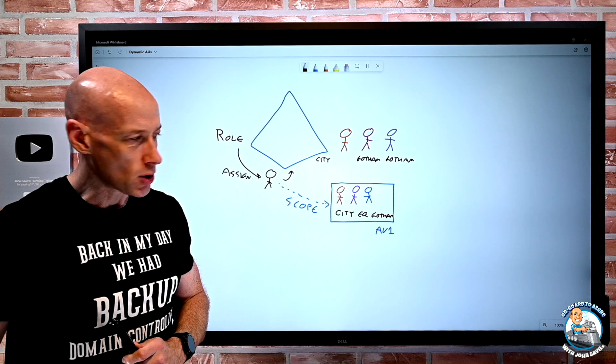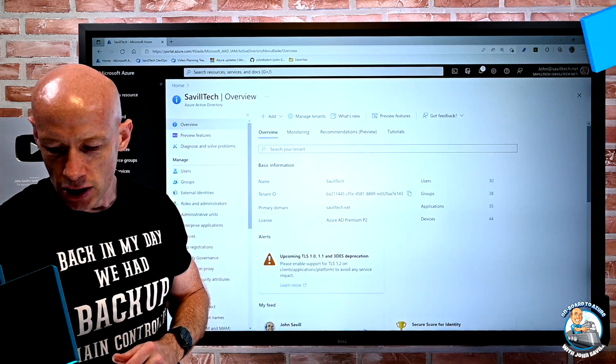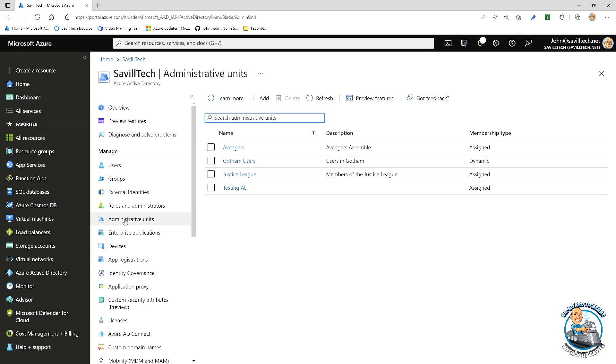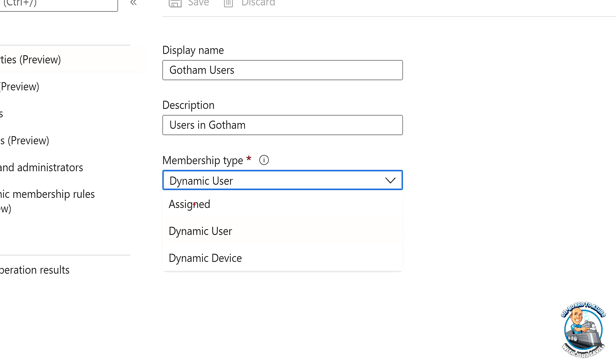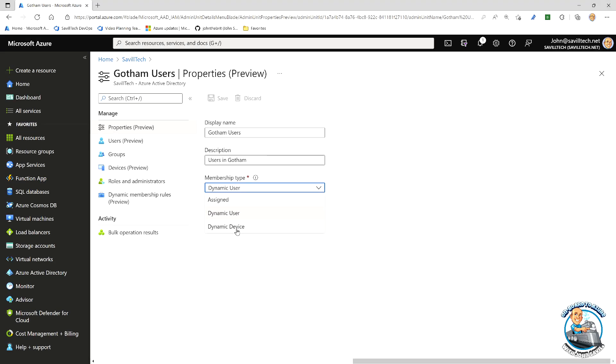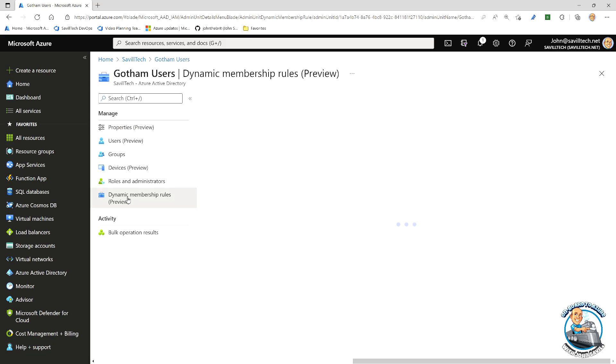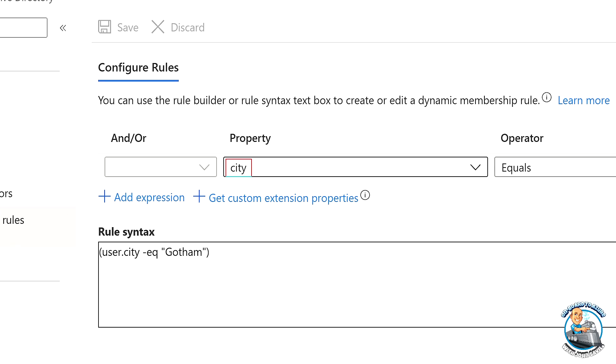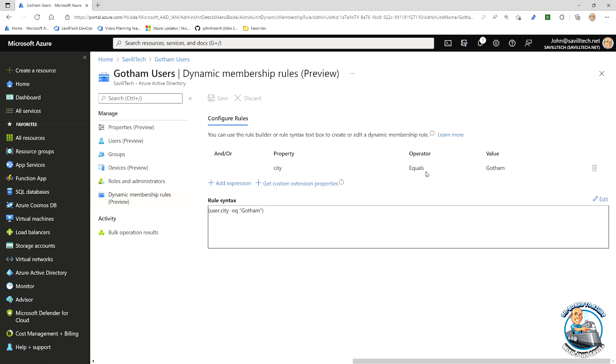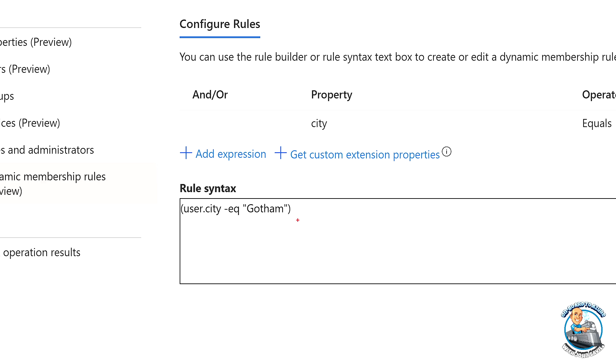Let me actually show you this. I'm going to jump over to my Azure AD. I went ahead and created an administrative unit, and I created one called Gotham Users. If we go and look at this, my properties - notice my membership type. I changed it from assigned to dynamic user. But notice there is also a dynamic device option. If I go and look at my dynamic membership rules, it's super simple. My property is if the city equals and it's set to Gotham. So that actual rule is just user.city equal Gotham. And that's it.